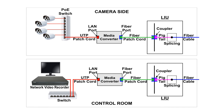We now have architectures ready for both the camera side and the control room. Finally, run and splice the fiber cable to connect both the LIUs at both ends and we are done.